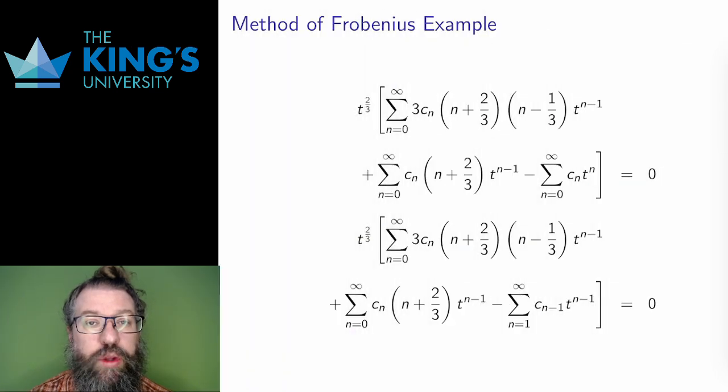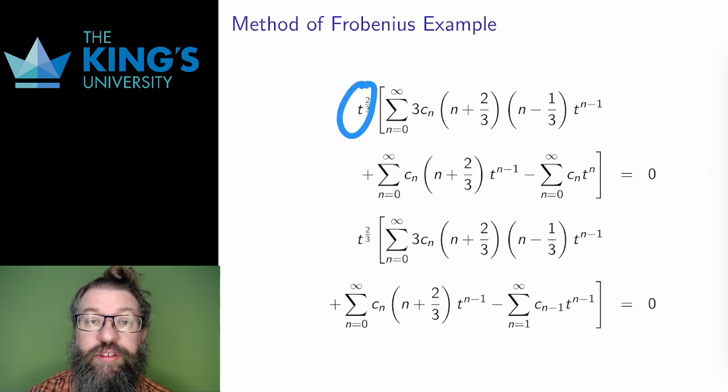Then I need to work with this, which is a bit tricky. The first thing I'm going to do is pull t to the 2/3 out of everything. This is almost always what I want to do with a non-integer exponent. It will make the rest of the series manipulation much easier. When I do that, I get these three series.